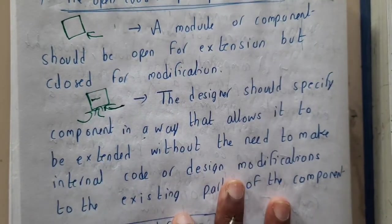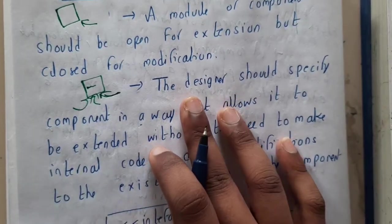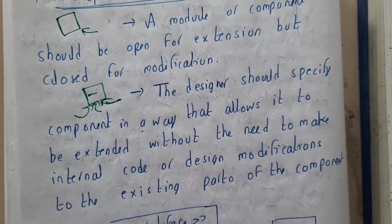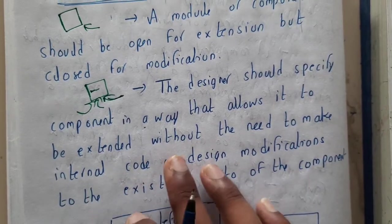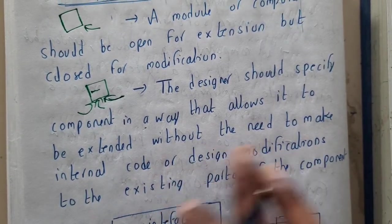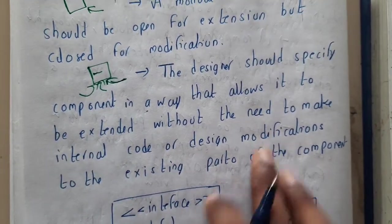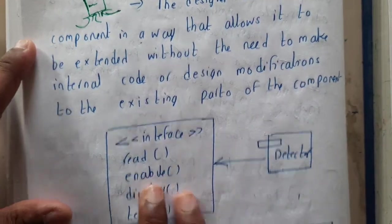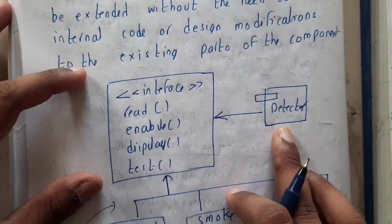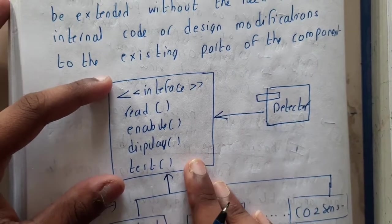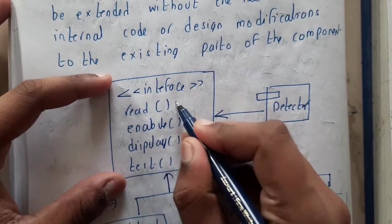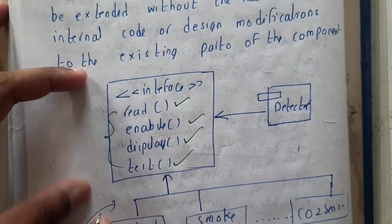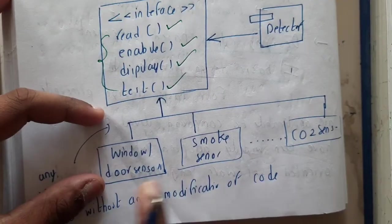The designer should specify the component in a way that allows it to be extended without changing the internal code or making design modifications. Assume we have a detector with an interface where it will read, enable, display, and test — these are some functions. For this, we are adding some components.